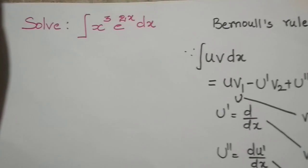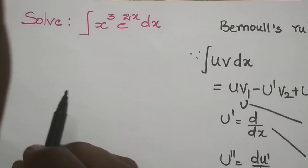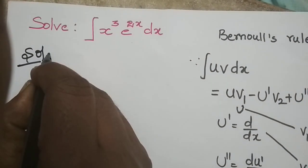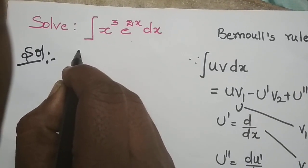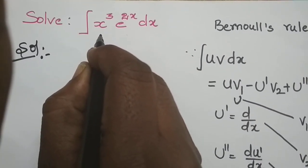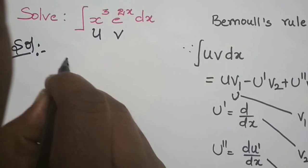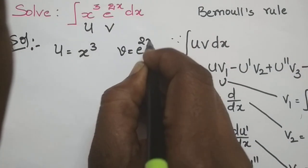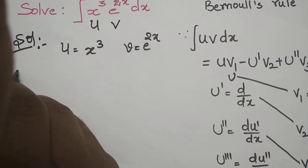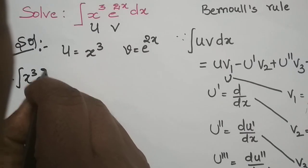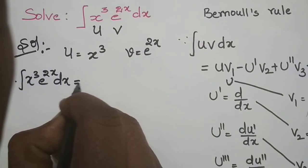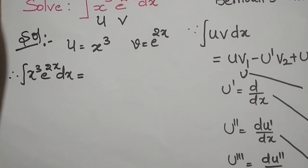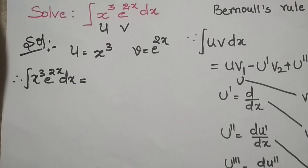Coming to our problem: integral of x cubed times e to the power 2x dx. The solution is to consider it in the form of integral uv dx, where u equals x cubed and v equals e to the power 2x. Before applying the rule, we need to find the derivatives.